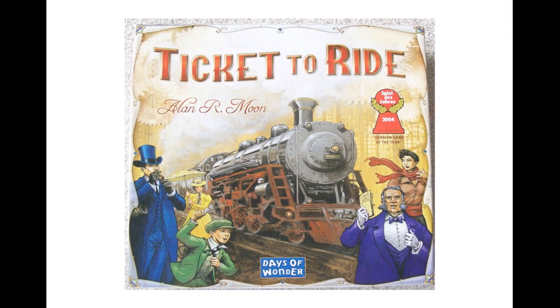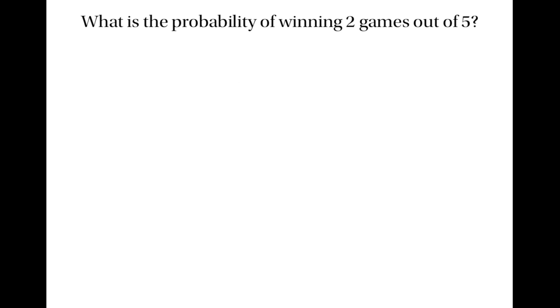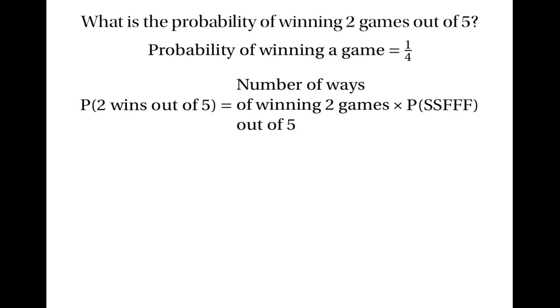Now let's look at a different example. Suppose that we play five games of Ticket to Ride in a row. Let's work out the probability of winning two games out of five. This time we'll assume that the probability of me winning a game is a quarter, so the probability of losing is three quarters. The probability of winning two games out of five will be the number of different ways of winning two out of five, times the probability that the first two games are wins and the final three are losses — which is one quarter squared times three quarters cubed.